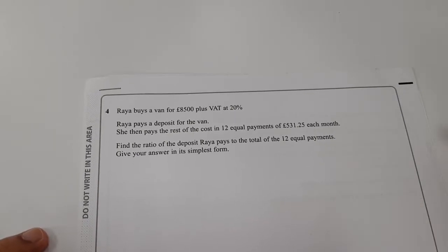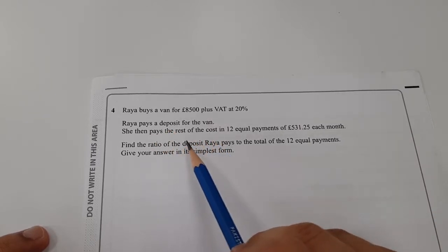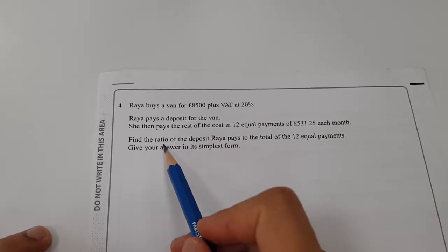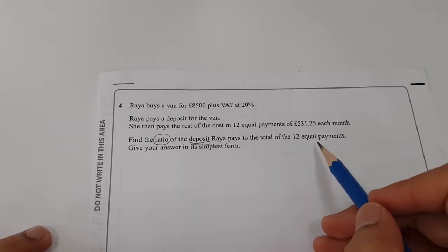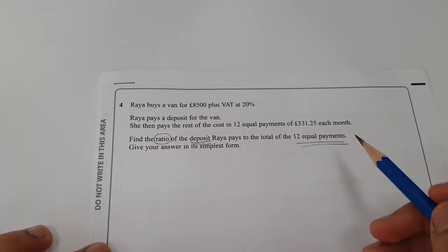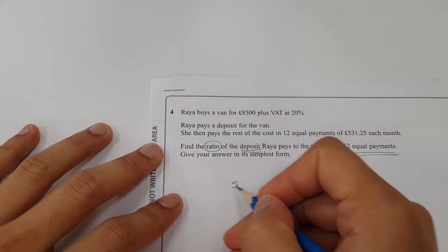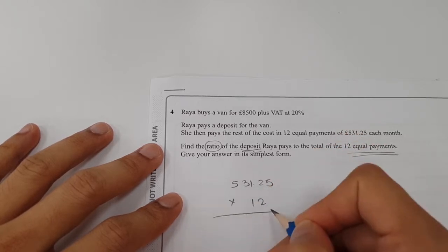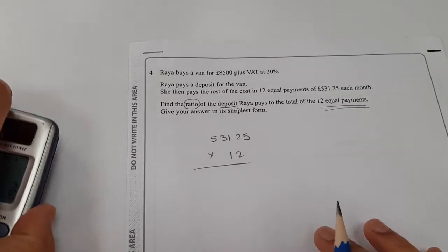So Raya buys a van, £8,500 plus VAT. Raya pays a deposit for the van, then pays the rest of the cost in 12 equal payments. Find the ratio. We're looking for the ratio of the deposit to the total equal payments. We can get the equal payments by doing 531.25 times 12. This would be the total installment or equal payments.